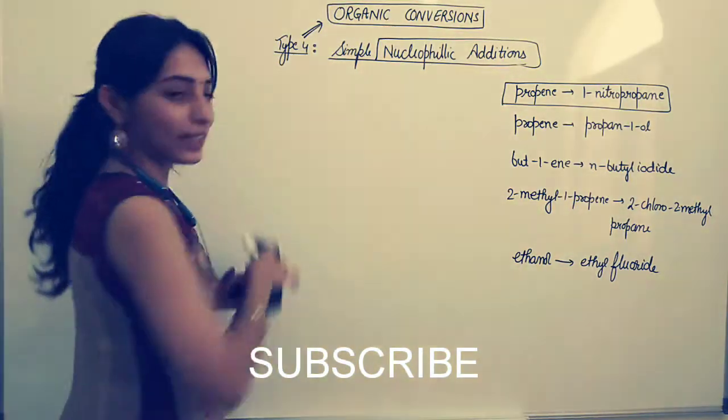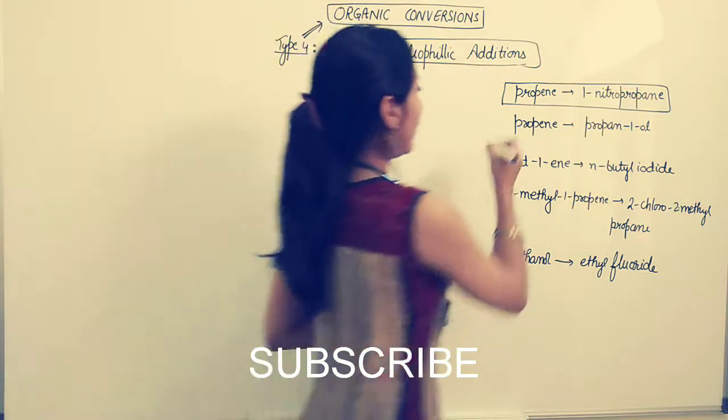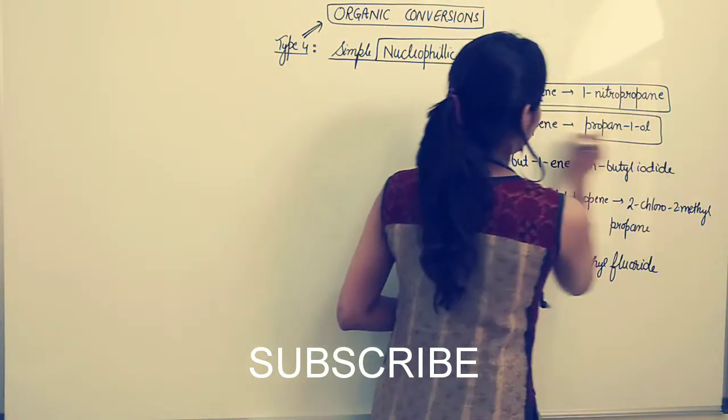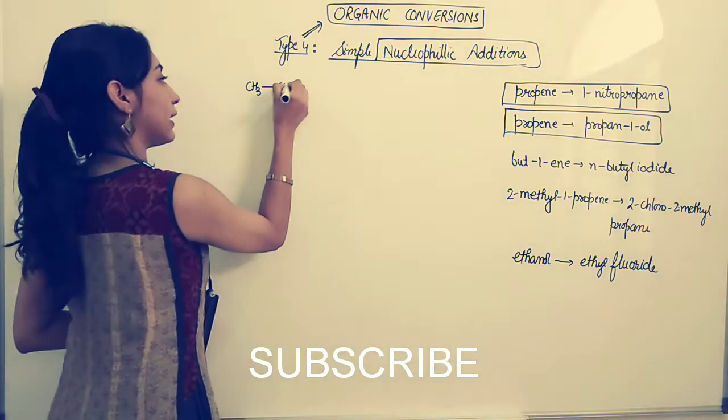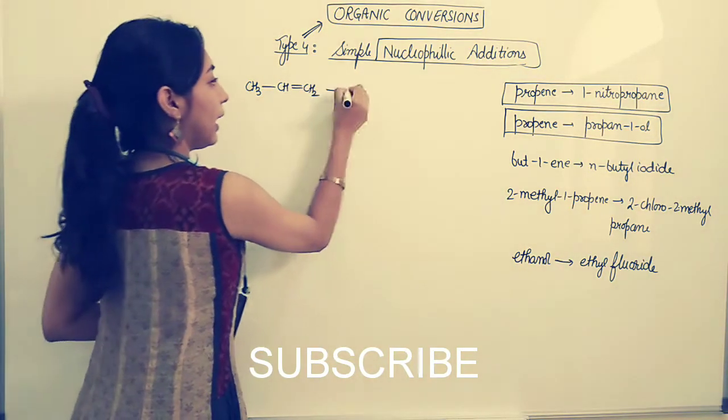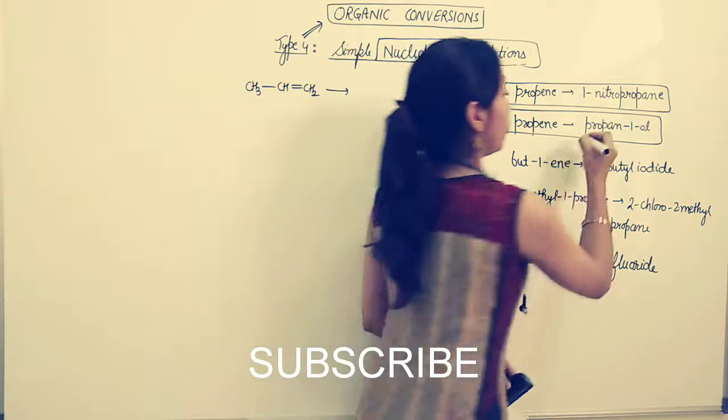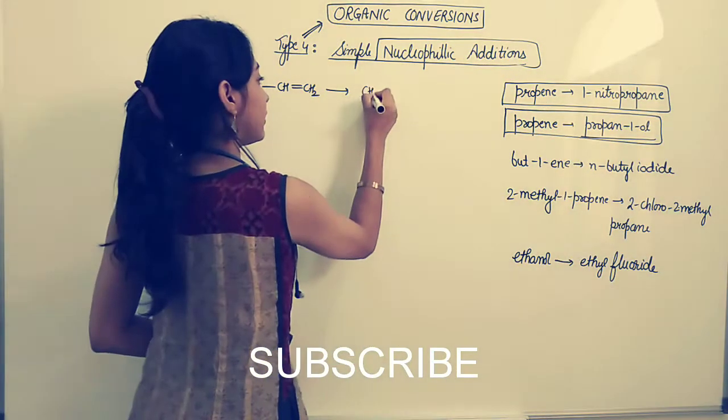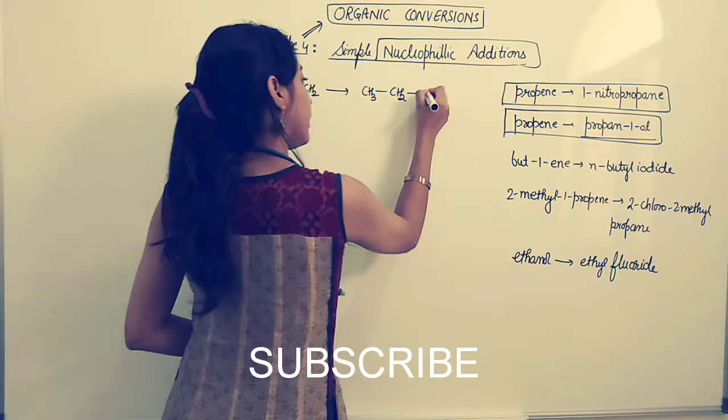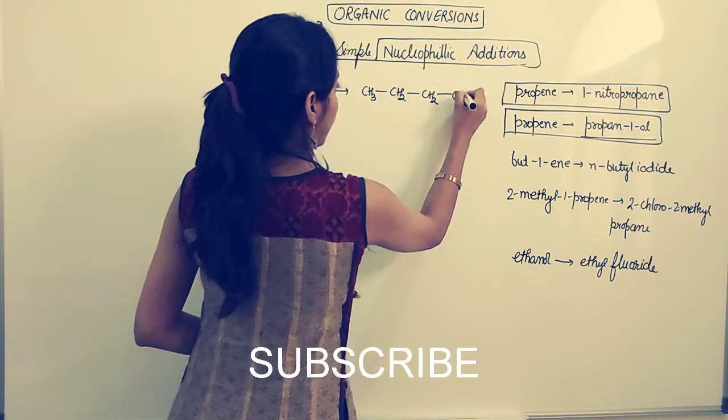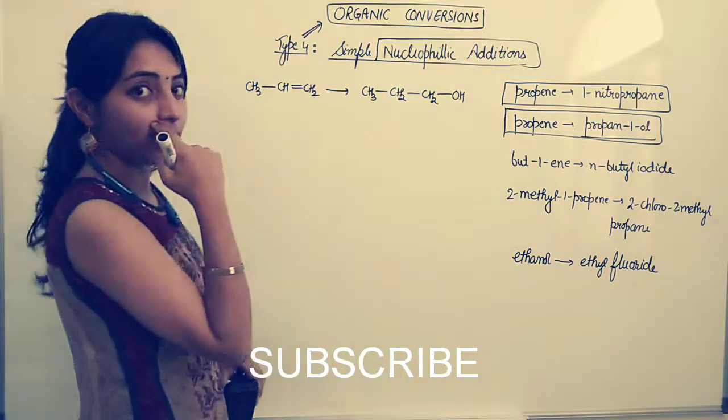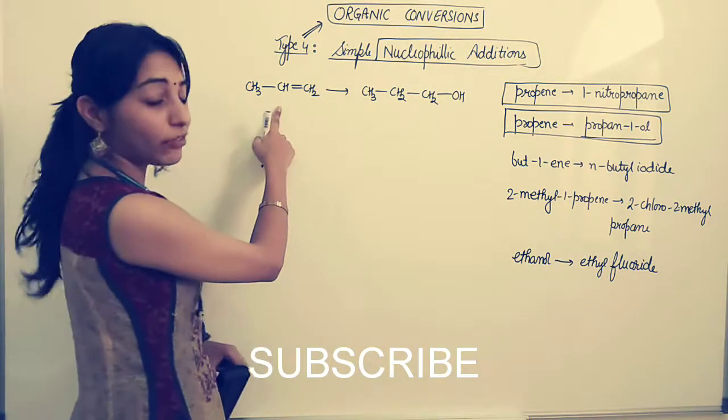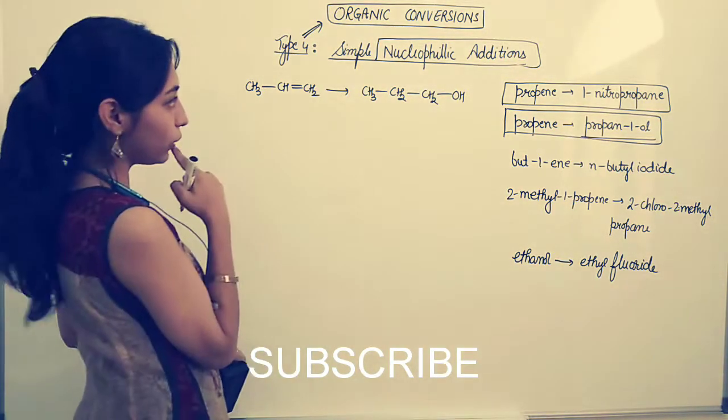Let's move further to the second question, which is I want to convert propene once again, CH3-CH double bond CH2, and this has to be converted to propanol, CH3-CH2-CH2-OH. First let's try to figure out whether this belongs to this conversion. Yes, double bond is going away. It is getting vanished.